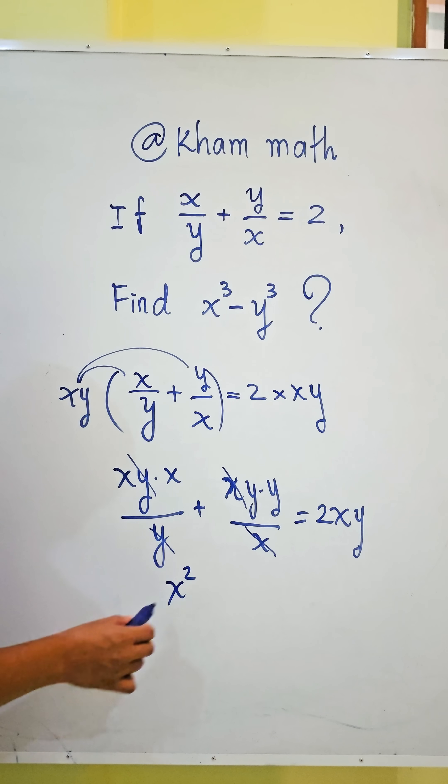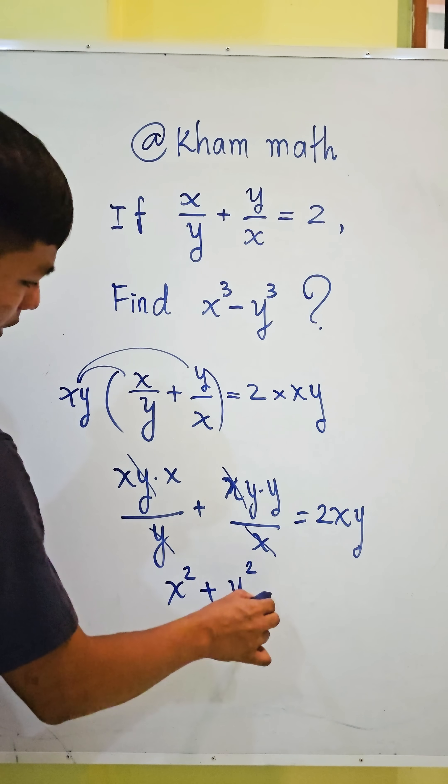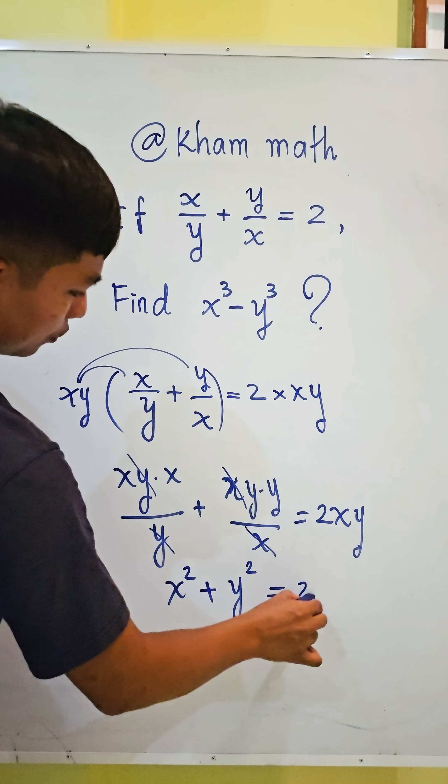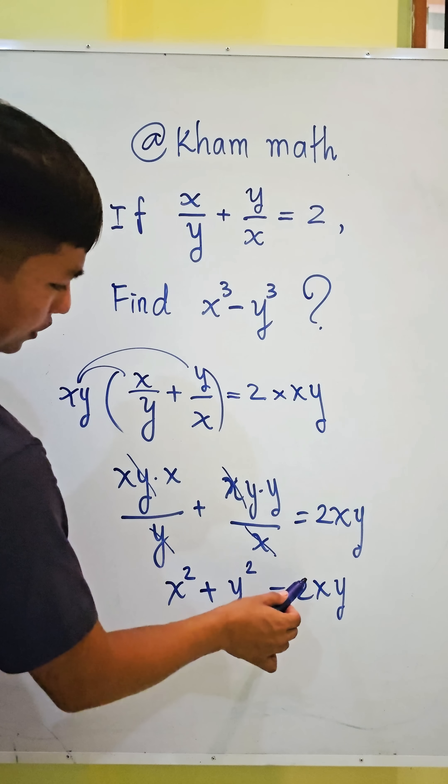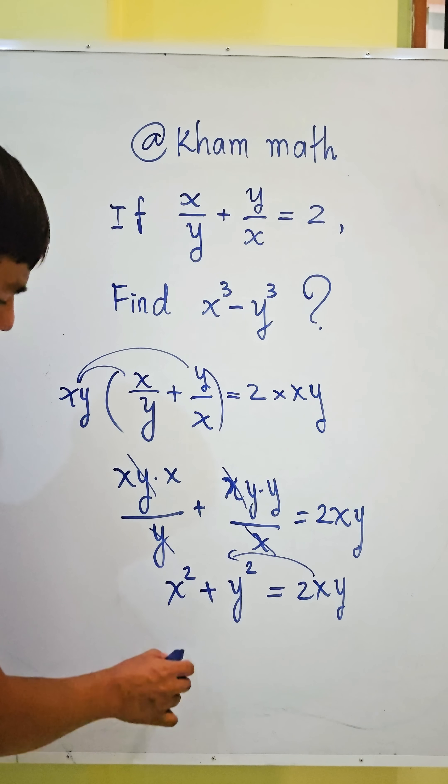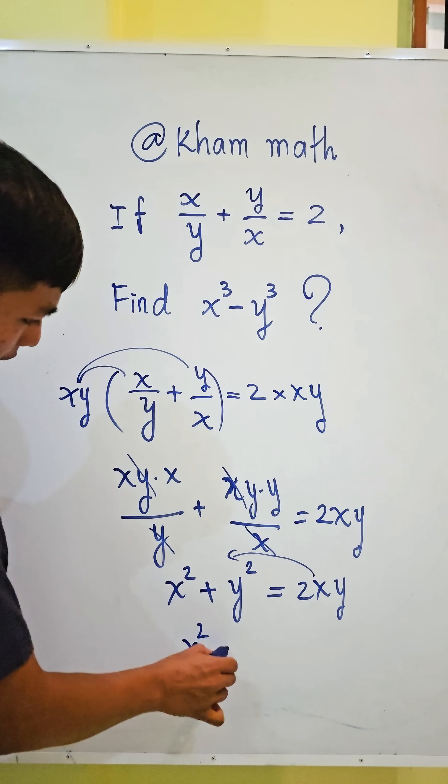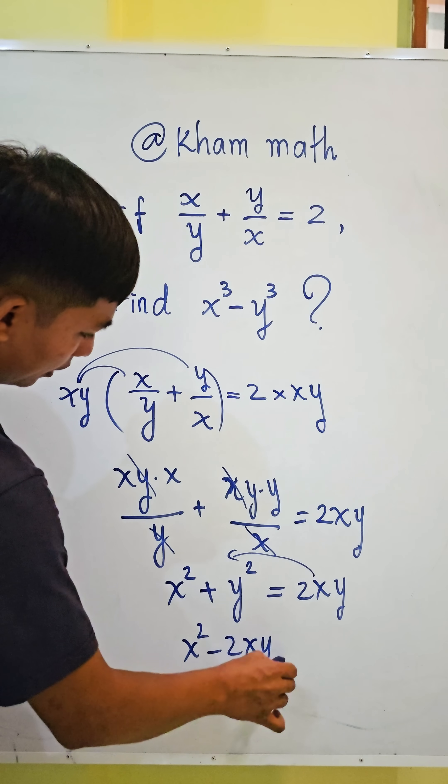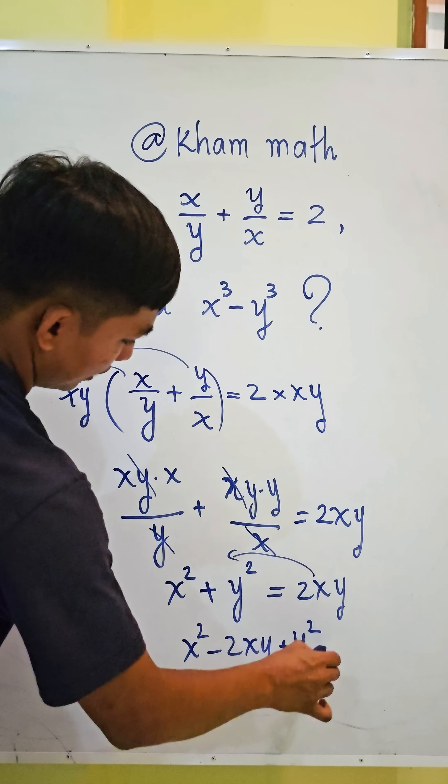Moving 2xy to the left side, we get x² - 2xy + y² = 0. This verifies the formula (x - y)² = 0.